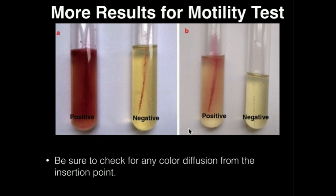Now, if you looked at this third tube initially you might say that's a negative result, but it is actually a positive result. Even though the red is not as obvious as the left tube, we do see some red diffusion away from the stab, meaning the bacteria were actually able to move away from the inoculating needle. Therefore this is a positive result. When we classify something as non-motile, there can't be any red diffusion — none at all — away from the stab. If it's a lot or even just a little, it's going to be a positive result for motility.